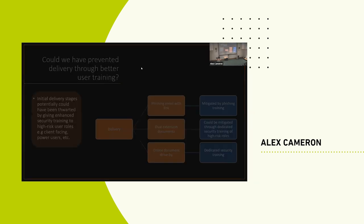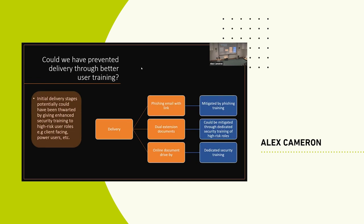As scary as this is, we could have done things to prevent it. This is an open-source packet capture available online. All that being said, this could have been prevented at the delivery stage. What if that person had looked at that banner and thought: 'I'm not going to click that, I don't trust it, it looks slightly different to normal'? People don't always receive that training. We're quite aware of phishing emails, but dual extension documents — like file.doc.exe which appears like a document but is actually an executable — or online document drive-bys are areas where training is often lacking.